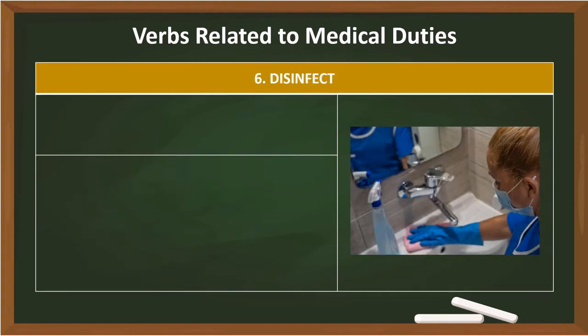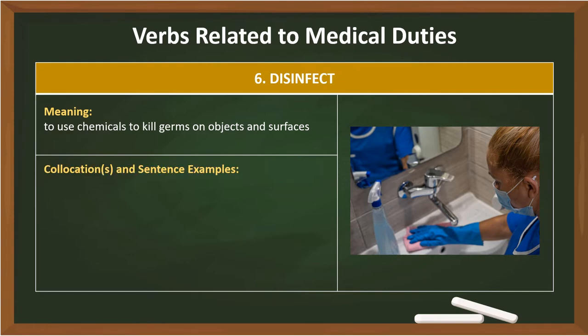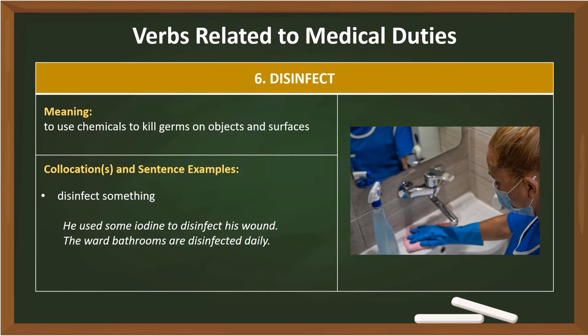6. Disinfect. Meaning: to use chemicals to kill germs on objects and surfaces. Collocations: Disinfect something — He used some iodine to disinfect his wound. The ward bathrooms are disinfected daily.